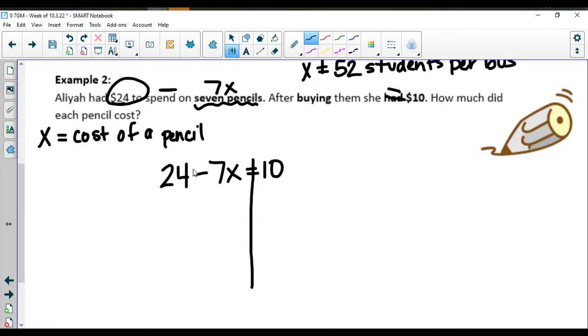Writing this out we have 24 minus 7X equals the $10 remaining. Going ahead dropping our line down, we are going to have 24 right here. We're going to subtract the 24. That's going to leave us with a negative 7X. Please be careful that negative goes with the seven, equals a negative 14.